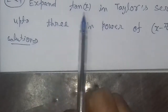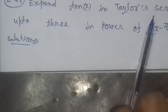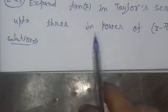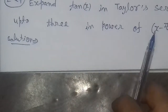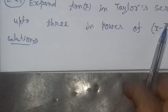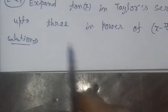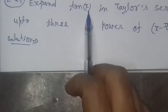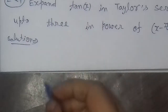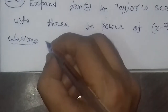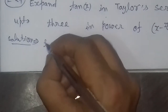The problem is: expand tan(x) in a Taylor series up to 3 terms in powers of (x minus π/4). To expand tan(x), we will first recall the Taylor series formula.